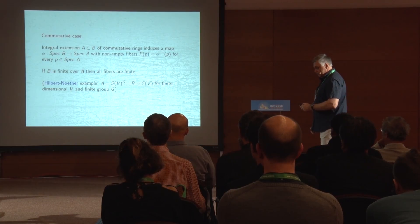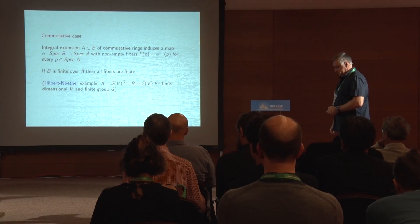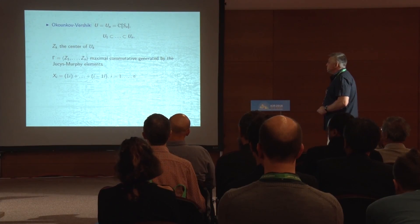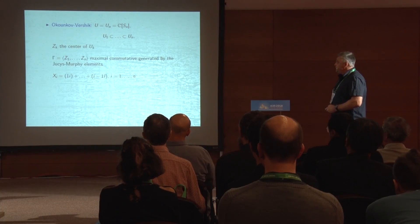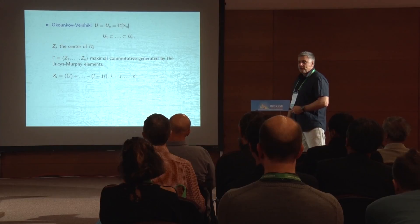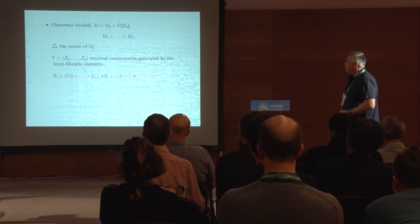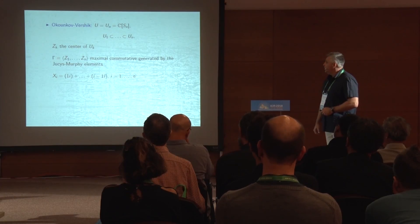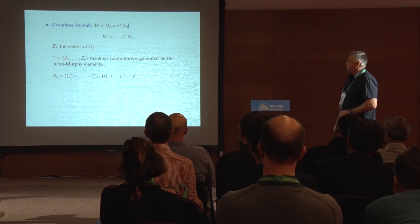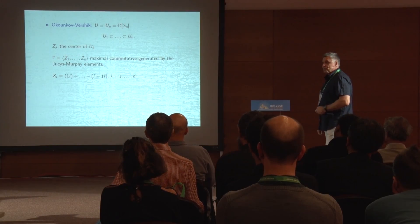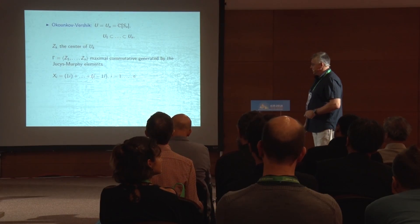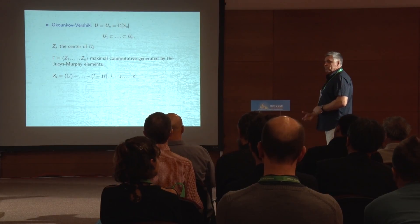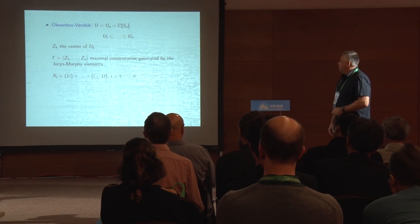The situation is very nice in the commutative case, but we're interested in the non-commutative situation. The next example comes from the Okounkov-Vershik work on representations of the symmetric group. In this case our associative algebra U is the group algebra of the symmetric group, with a natural embedding of group subalgebras for S1, S2, and so on. From each we choose the center, and combining these centers we form a commutative sub-algebra gamma in U — a maximal commutative sub-algebra generated by the Murphy elements, which are sums of transpositions.